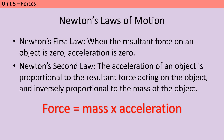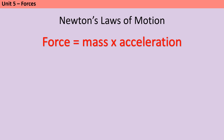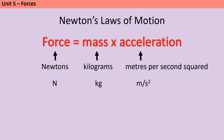To describe how resultant forces cause objects to move we need Newton's first and second laws. The first law tells us that when the resultant force on an object is zero, acceleration is zero — so if the object is already stationary it will stay stationary, but if it's already moving at a constant speed it will continue to move at that constant speed. Newton's second law tells us that acceleration is proportional to the resultant force and inversely proportional to the mass. This can be described mathematically as force equals mass times acceleration. Make sure you know the units for each, and remember that acceleration can be negative, indicating that an object is slowing down.